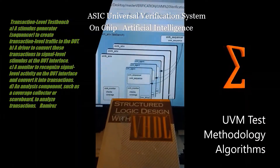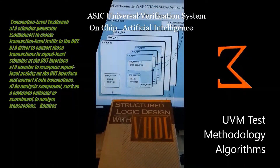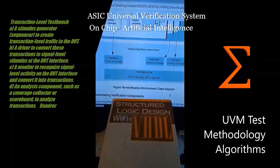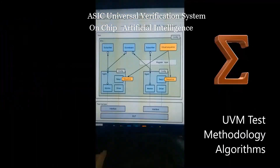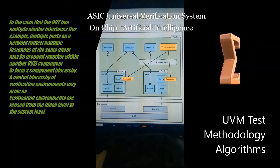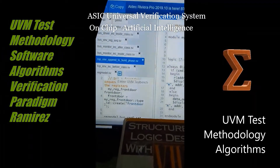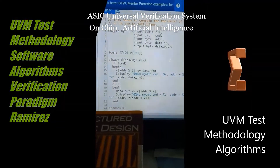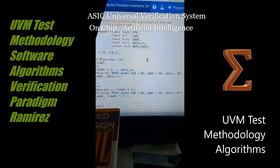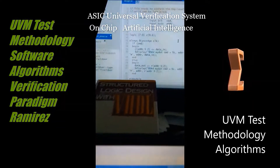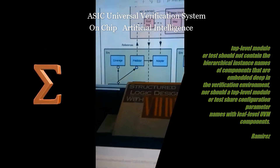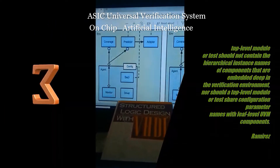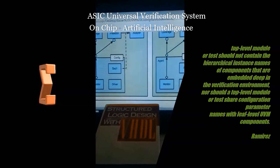You can take an existing item of Verification Intellectual Property and replace subcomponents or alter the sequence of transactions. It extends behavior without touching or copying the source code, and without the original author of the VIP having needed to anticipate any changes.